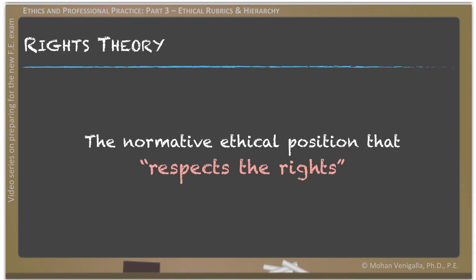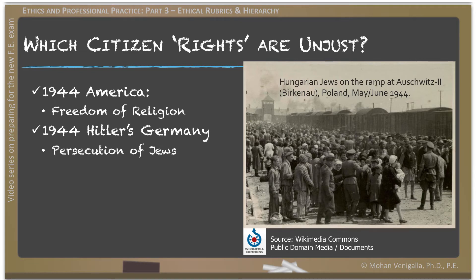Rights theory is based on individual rights and giving respect to those rights. The individual rights set forth by a society are protected and given the highest priority in this theory. One strong assumption here is that rights are considered ethically correct and valid since a large or ruling population endorses them. Take the example of 1944 America versus 1944 Hitler's Germany — America had freedom of religion while Hitler's Germany had persecution of Jews. Both rights were endorsed by large populations, but clearly one is wrong.